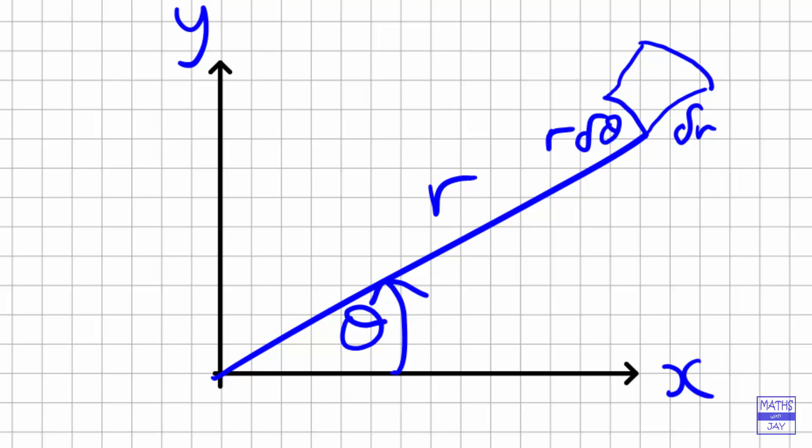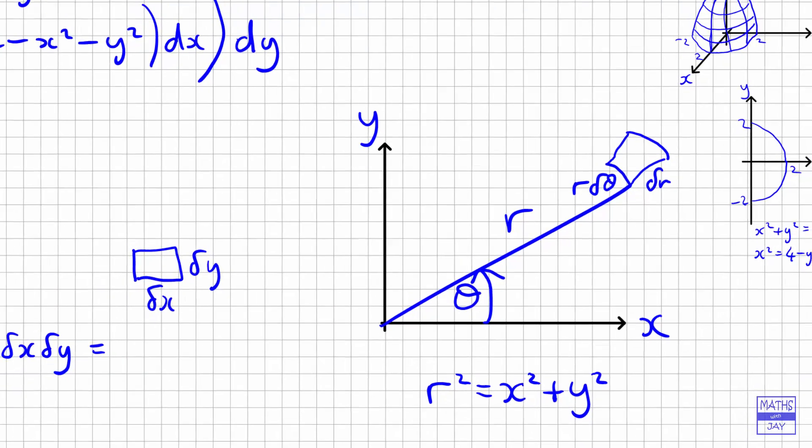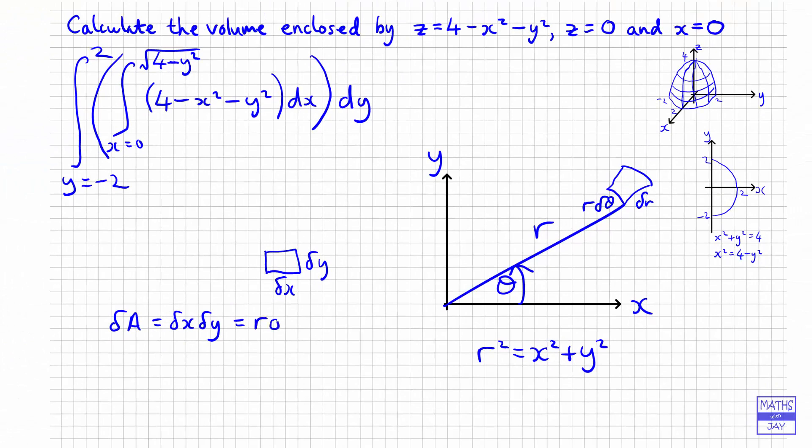So we've got a very small increase in theta delta theta, but the arc length is going to be r times delta theta and a little increase in r delta r. So that means that when we look at our area of our little element, it's going to be r delta theta delta r, or changing the order, r delta r delta theta. So that when we come to do our integral, whatever our integral is, instead of dx dy, we'll have r dr d theta. So that's the really important thing to remember.